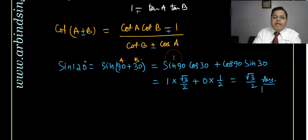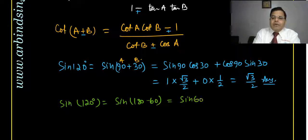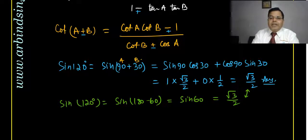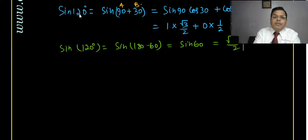We can also verify by writing sin 120° as sin(180° − 60°), which equals sin 60°, since sine is positive in the second quadrant. The value of sin 60° is root 3 by 2 — same result. So the formula is verified. I have not given geometrical verification as it is not necessary for physics.